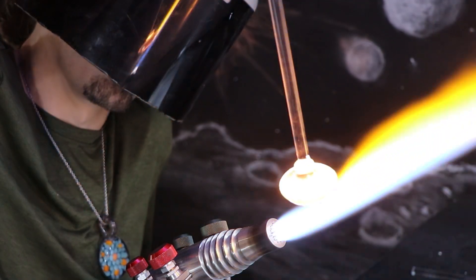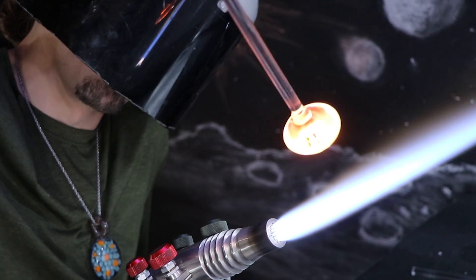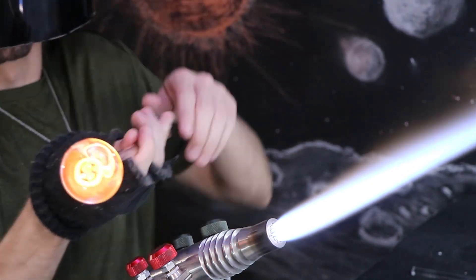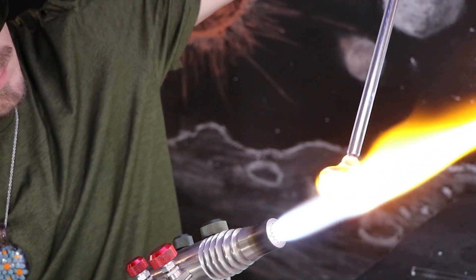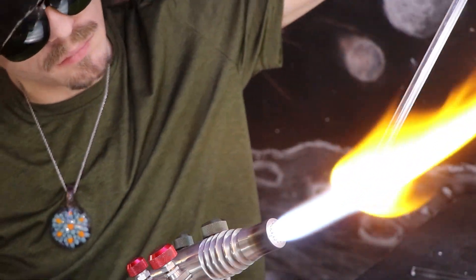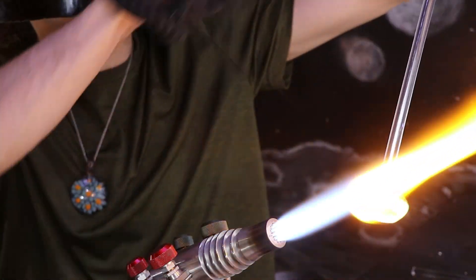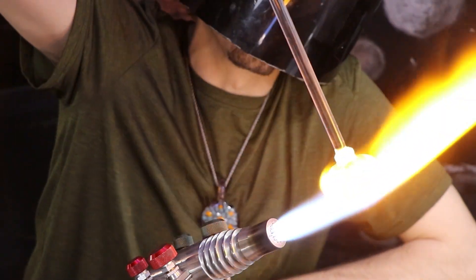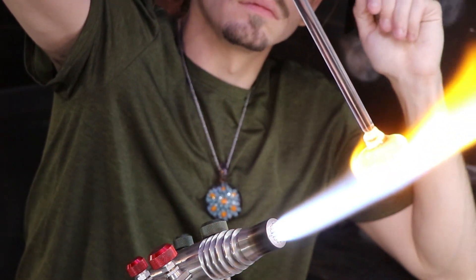And so I have all of that color completely melted into the surface. I'm going to begin to melt the entire thing down into a sphere. The clear glass will begin to melt down around the color, starting to implode it deeper into the sphere.